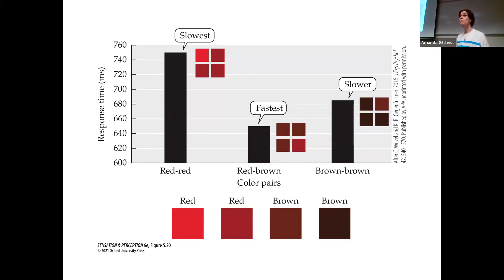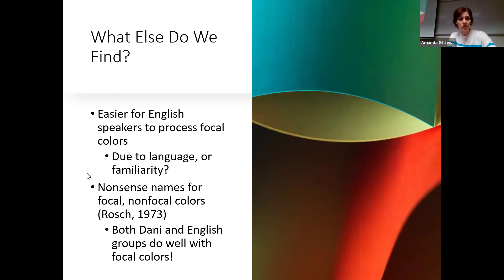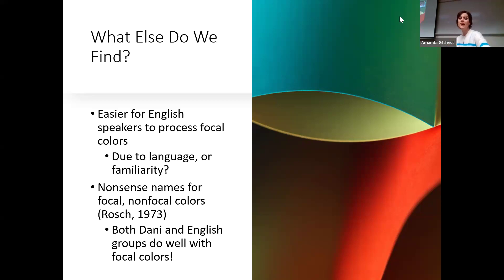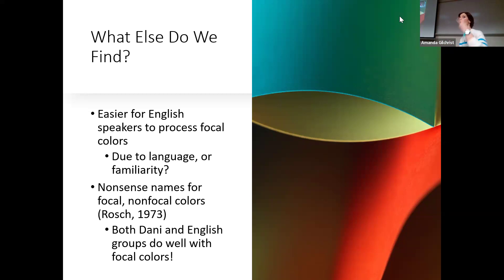Even though different groups of people have different color terms and may only have two, we have reason to believe they perceive color similarly to us. Research by Rosch and colleagues with the Dani people found that initially English speakers processed focal colors more easily, but that was likely due to familiarity. When both groups were given nonsense terms to name colors, both Dani and English groups did better with focal colors, indicating that even with only two color words, the Dani largely perceive color similarly.